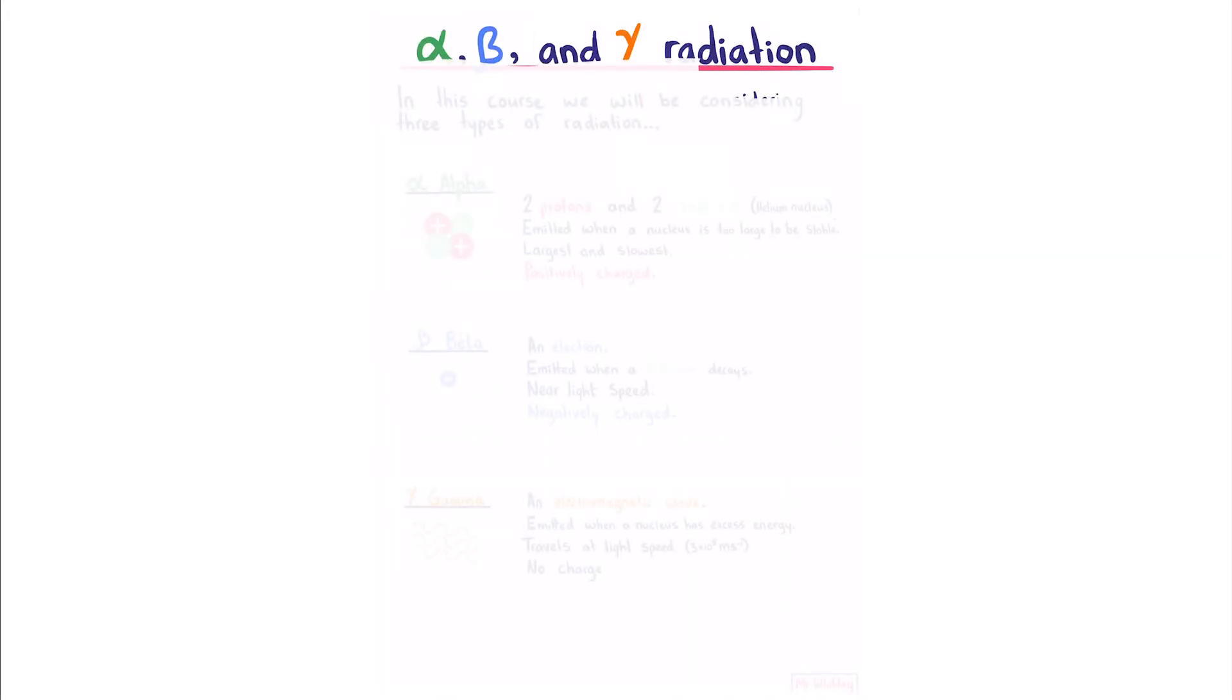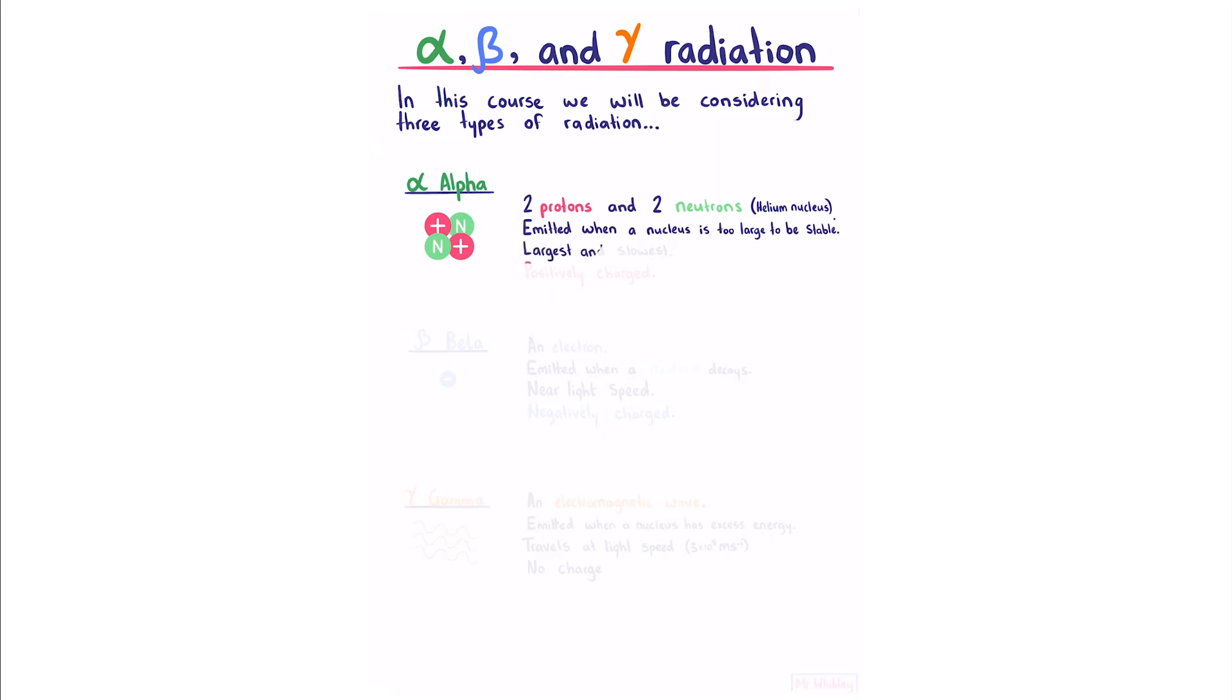Alpha, beta, and gamma radiation: In this course, we will be considering three types of radiation. Alpha radiation consists of two protons and two neutrons, which is essentially a helium nucleus. It's emitted when a nucleus is too large to be stable. It is the largest and slowest of the three we'll talk about. And because of its two protons, it is positively charged.